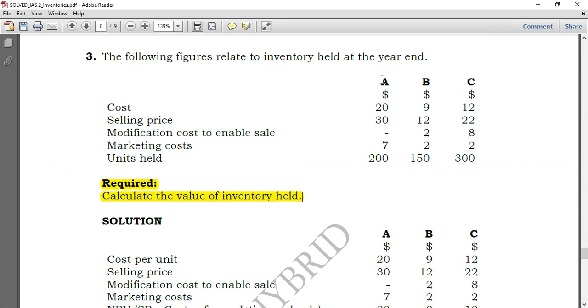Now look, we've got three products. We have product A, product B, as well as product C as you see here. And now, if you look at this information, it has cost, we have selling price, modification cost, and marketing costs as well as units held. So how do we go about this?